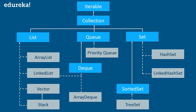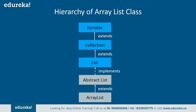Similarly, Deque is also an interface, so it extends and inherits the Queue interface. Talking about ArrayList, it uses a dynamic array for storing elements. It inherits the AbstractList class and implements the List interface. The List interface extends Collection and Iterable interfaces in hierarchical order. So this is about the hierarchy of the ArrayList class.